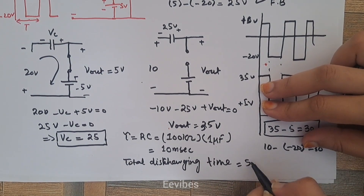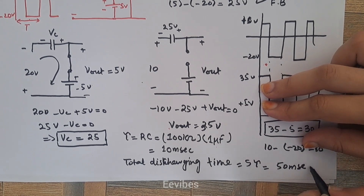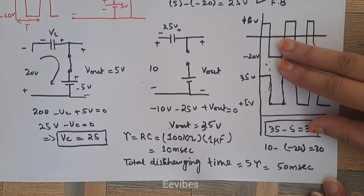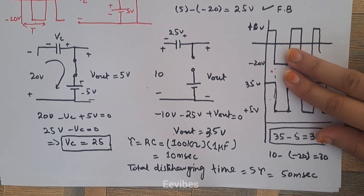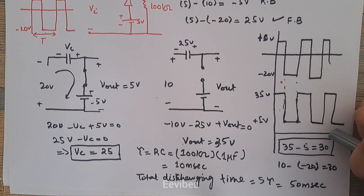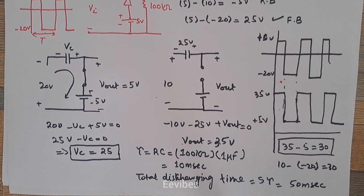The total discharging time is equal to 5 times tau, which equals 50 milliseconds. We claim that better clamping action is performed when the time period of the input voltage waveform is very small compared to the discharging time of the capacitor.